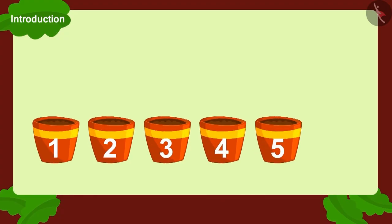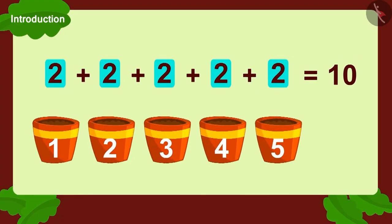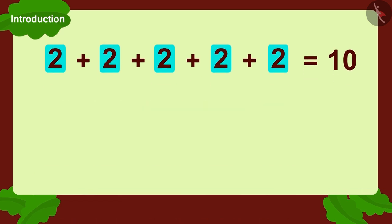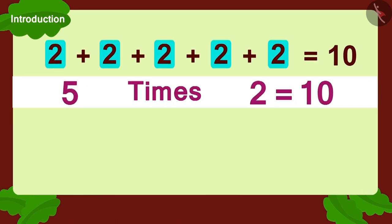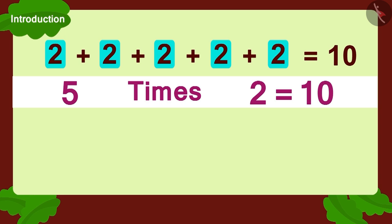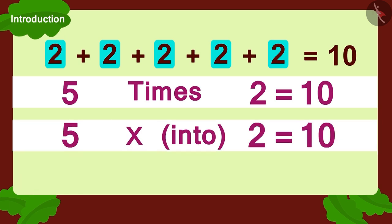Each pot has two seeds and there are five such pots. We can write it as five times two, or we can also write it as five multiplied with two.